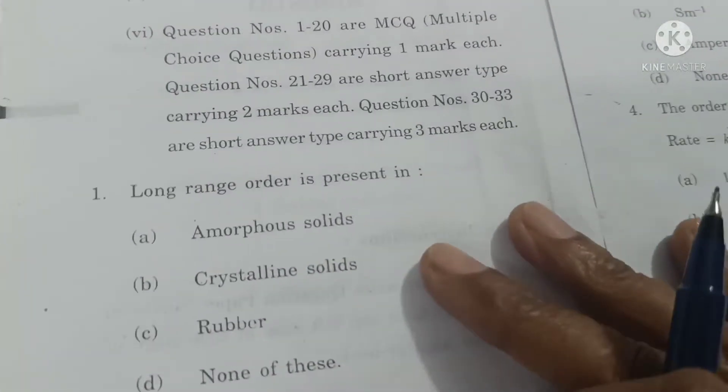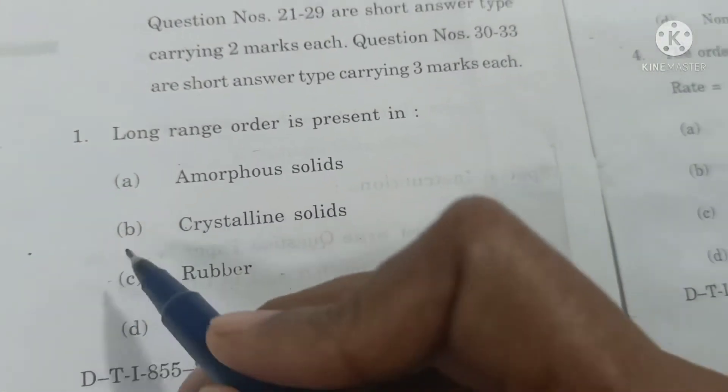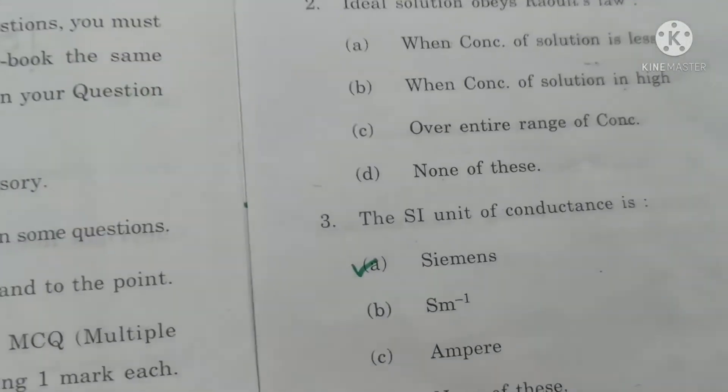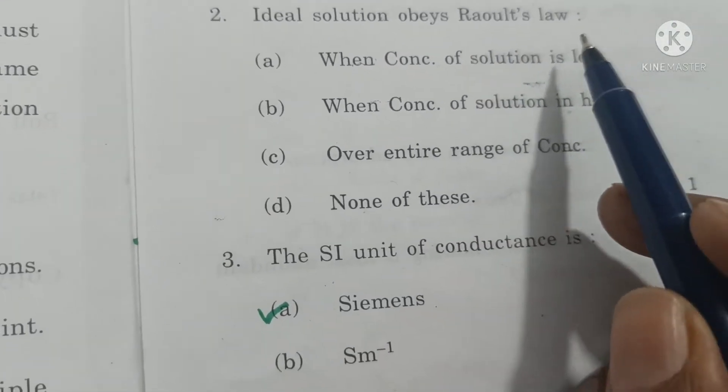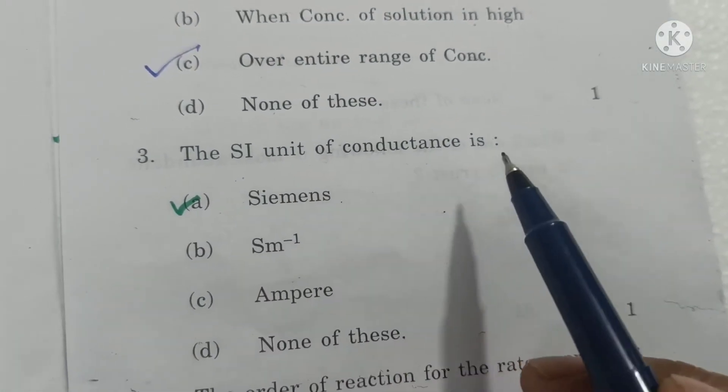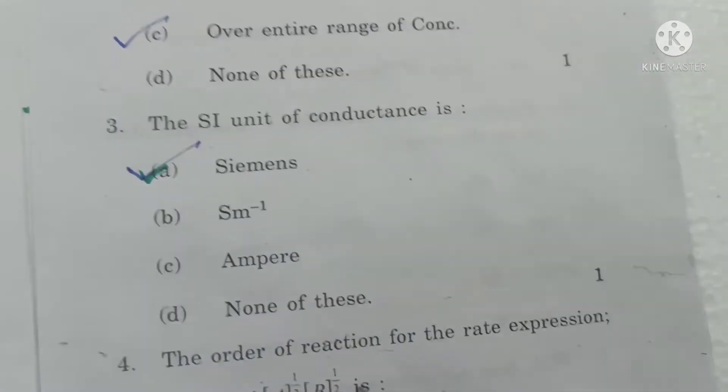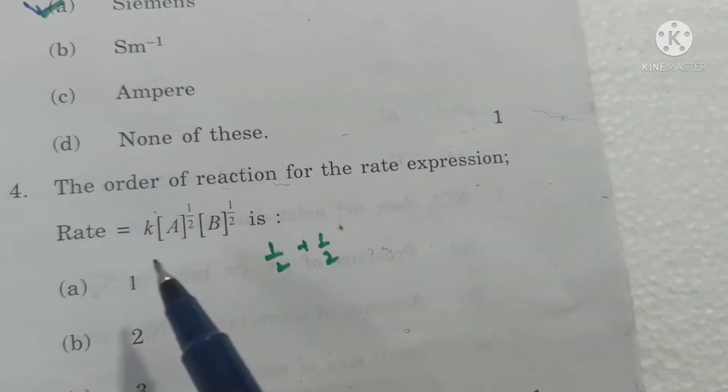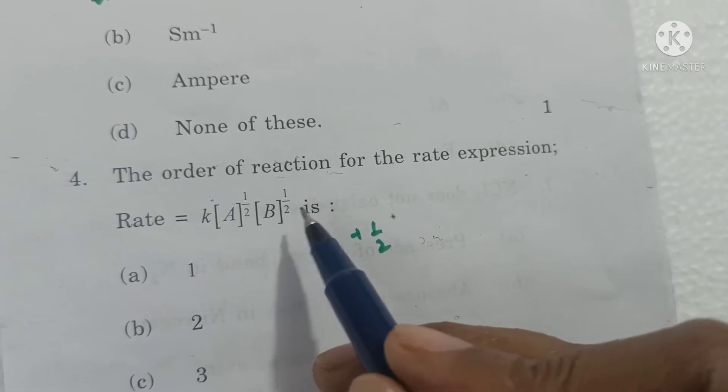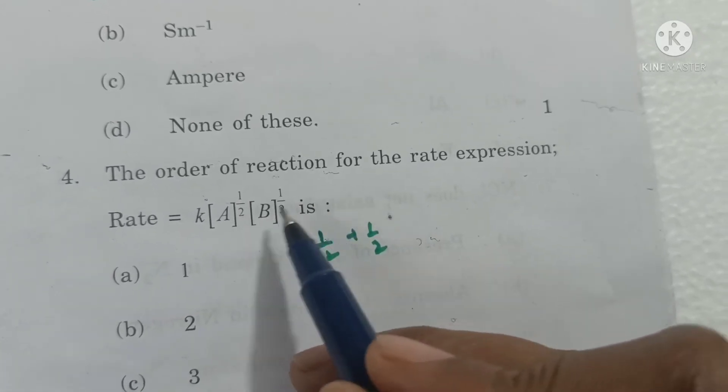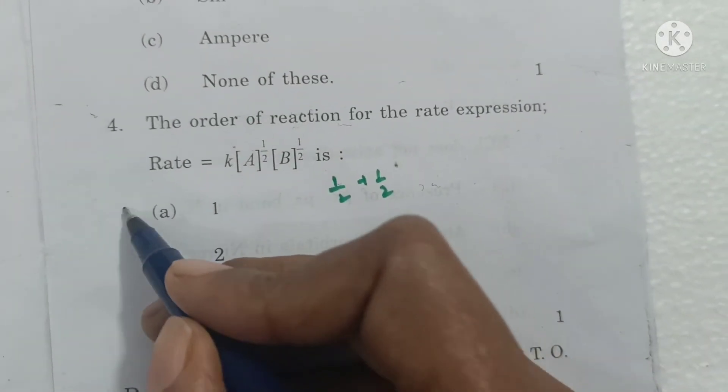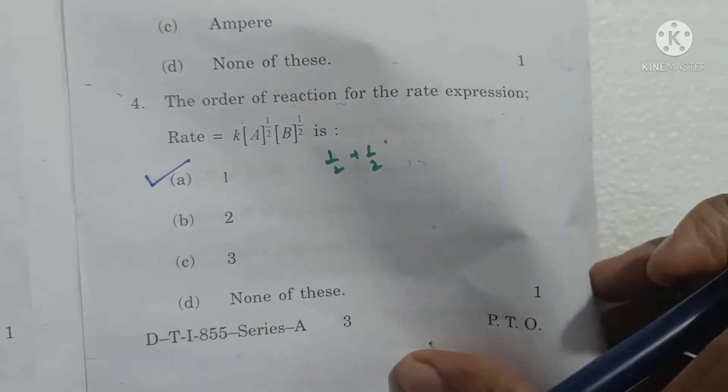First question: long range order is present in crystalline solids. Question 2: ideal solution obeys Raoult's law over entire range of concentration. The SI unit of conductance is Siemens. The order of reaction for rate expression rate equals K into A raised to power half into B raised to power half is one, because half plus half equals one.